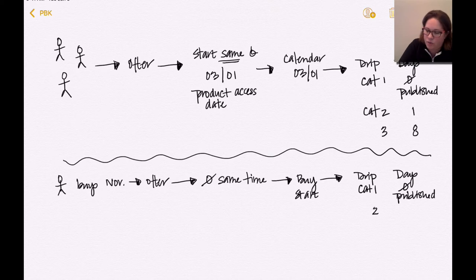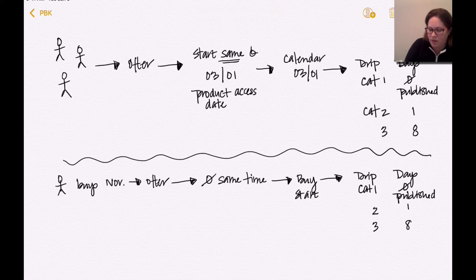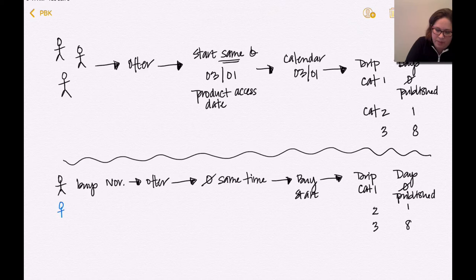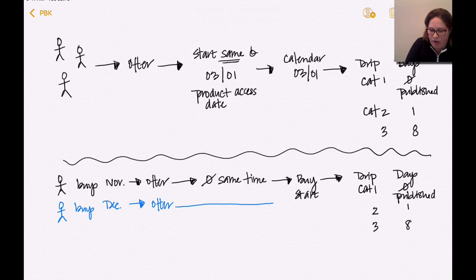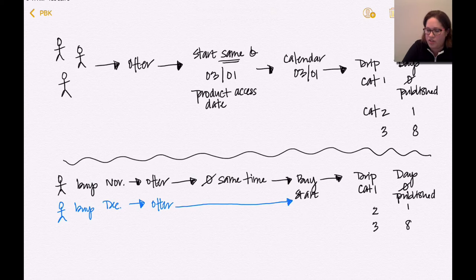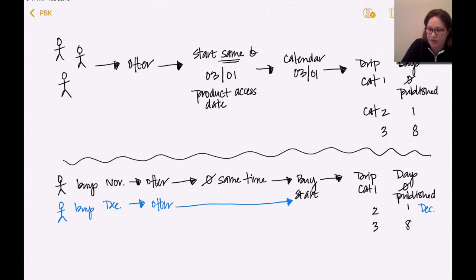Then two drips on day one, and category three drips out on day eight. So this person buys in November. Well, this person buys in December. They're going to do the same exact offer here. Again, they're not going at the same time. So when they buy, they start. So this person is going through here with December dates.